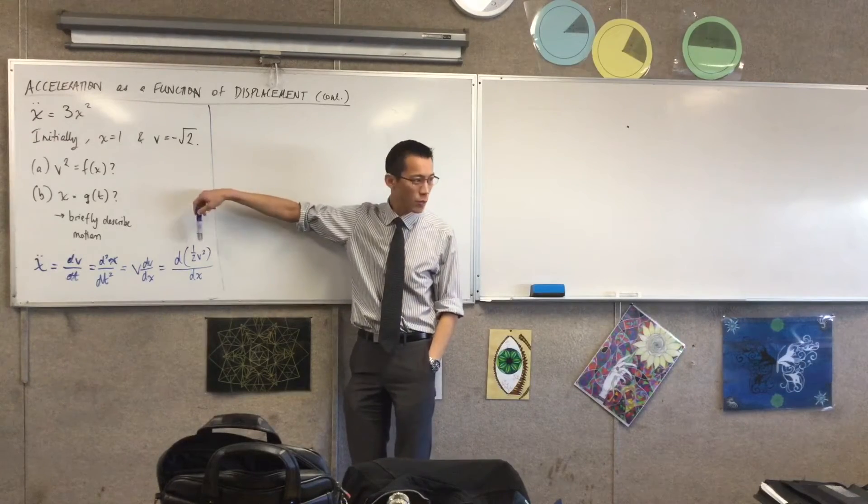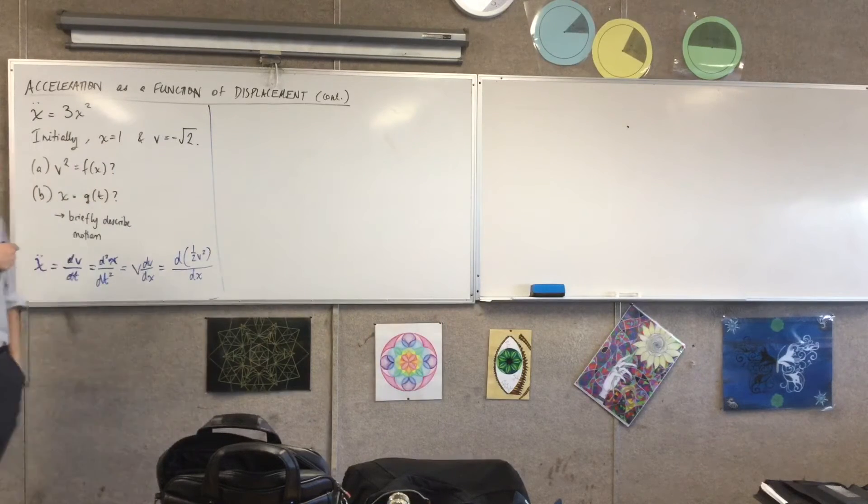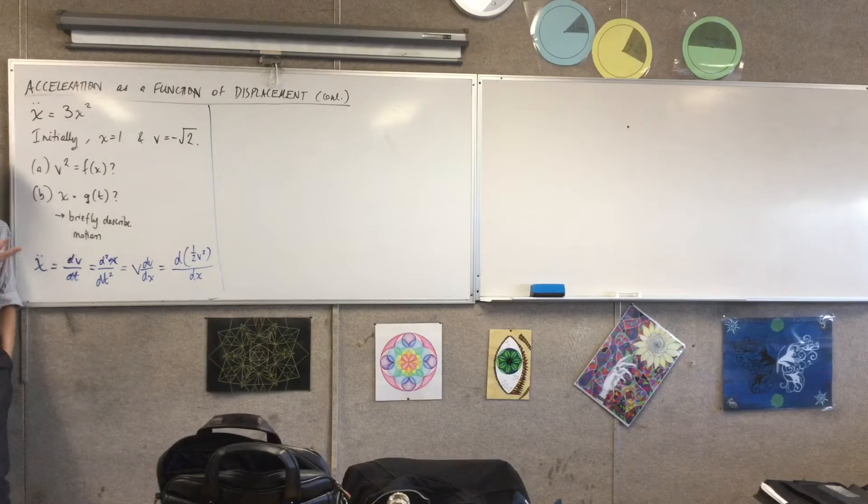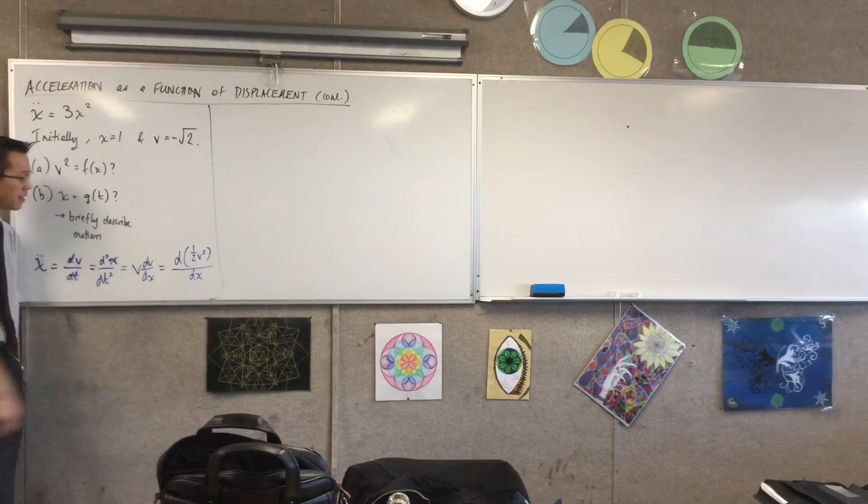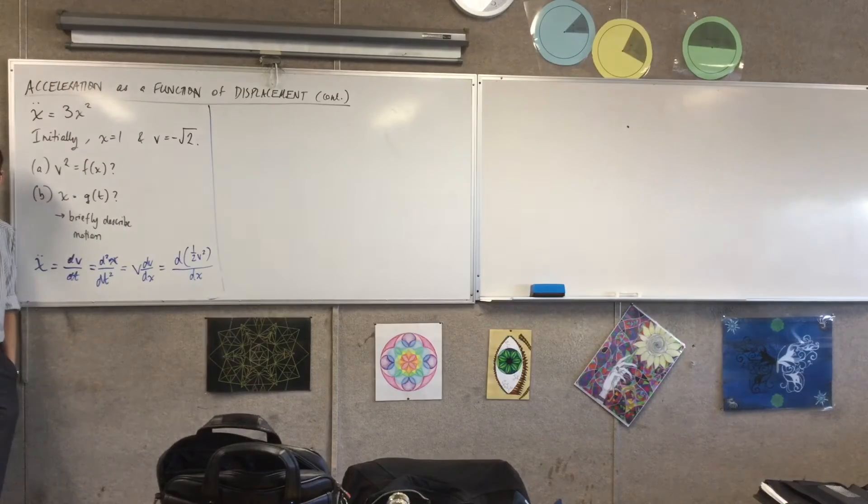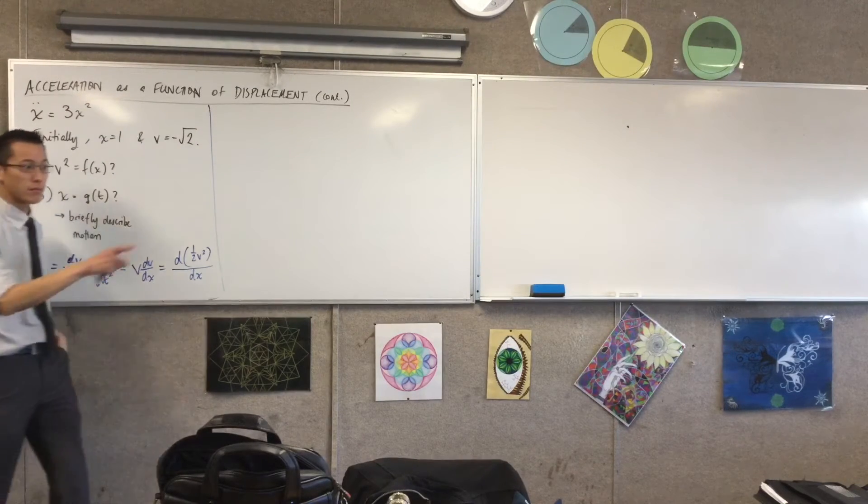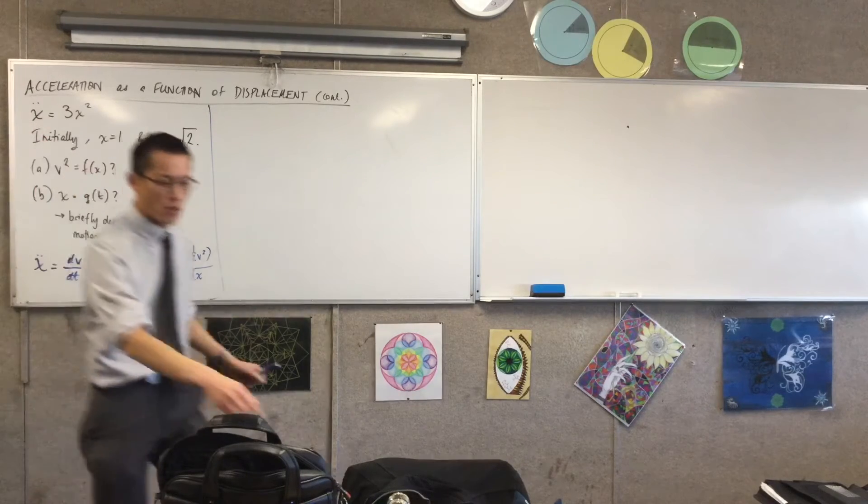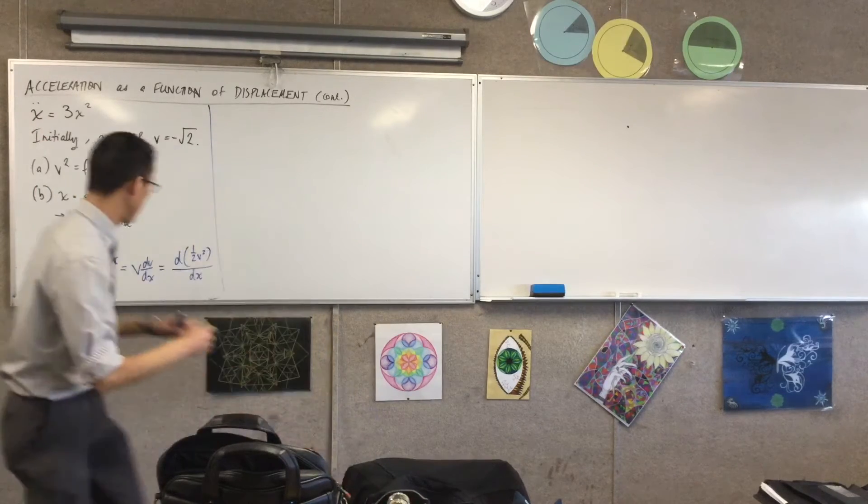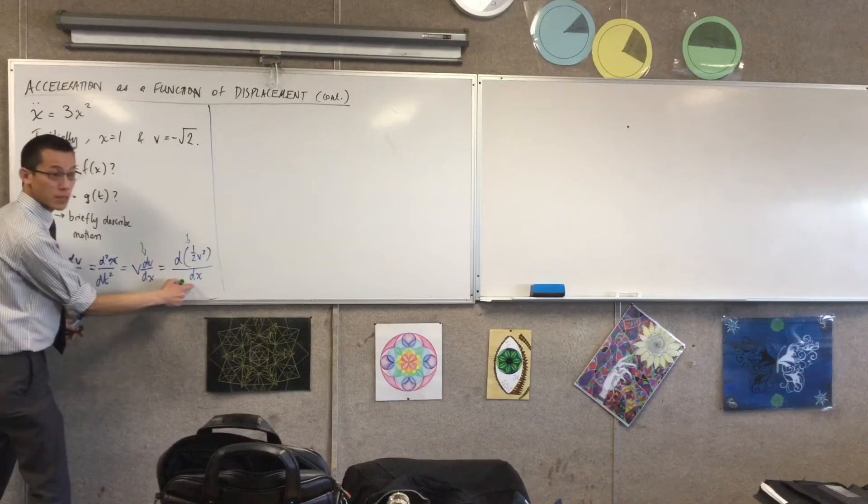Now we're going to use this one. It's kind of a giveaway that we're going to use this for two reasons. Number one, have a look at the way question A is phrased. They want v squared, so use the one with v squared in it. There's another clue. What's the other clue that tells you that's the one you've got to use? X's in the acceleration. Acceleration is a function of displacement, right? When you have a look at each of these expressions, this is in terms of velocity, and this is in terms of displacement.